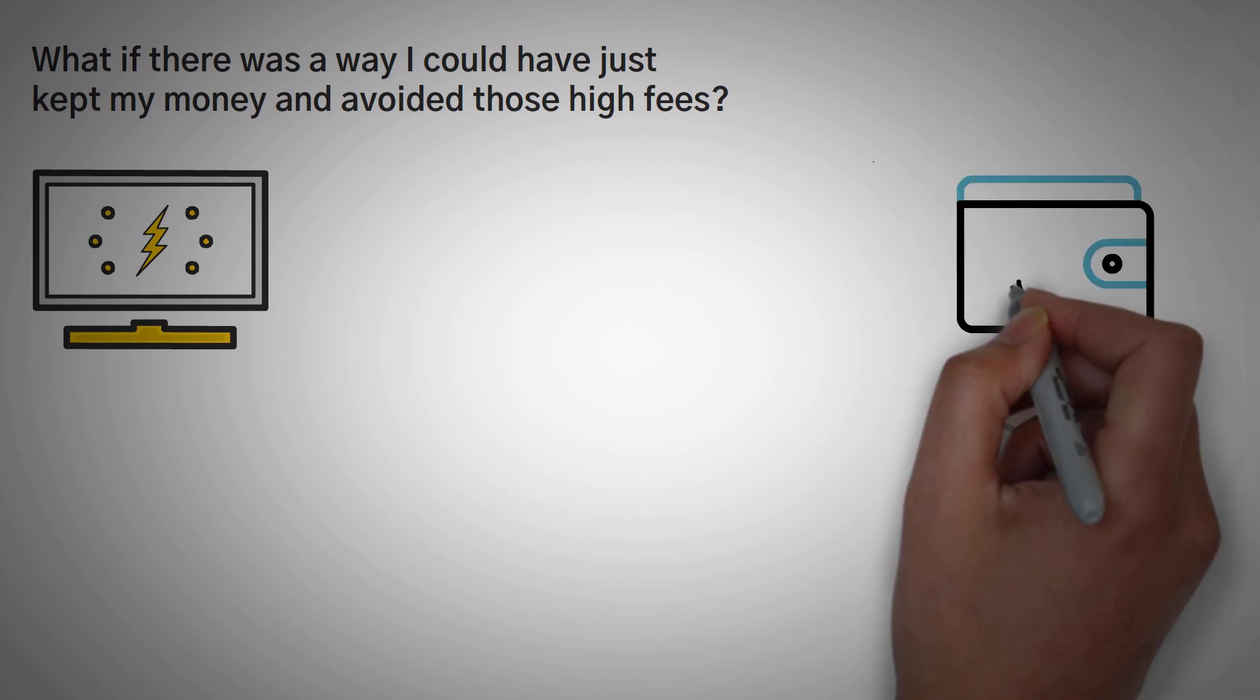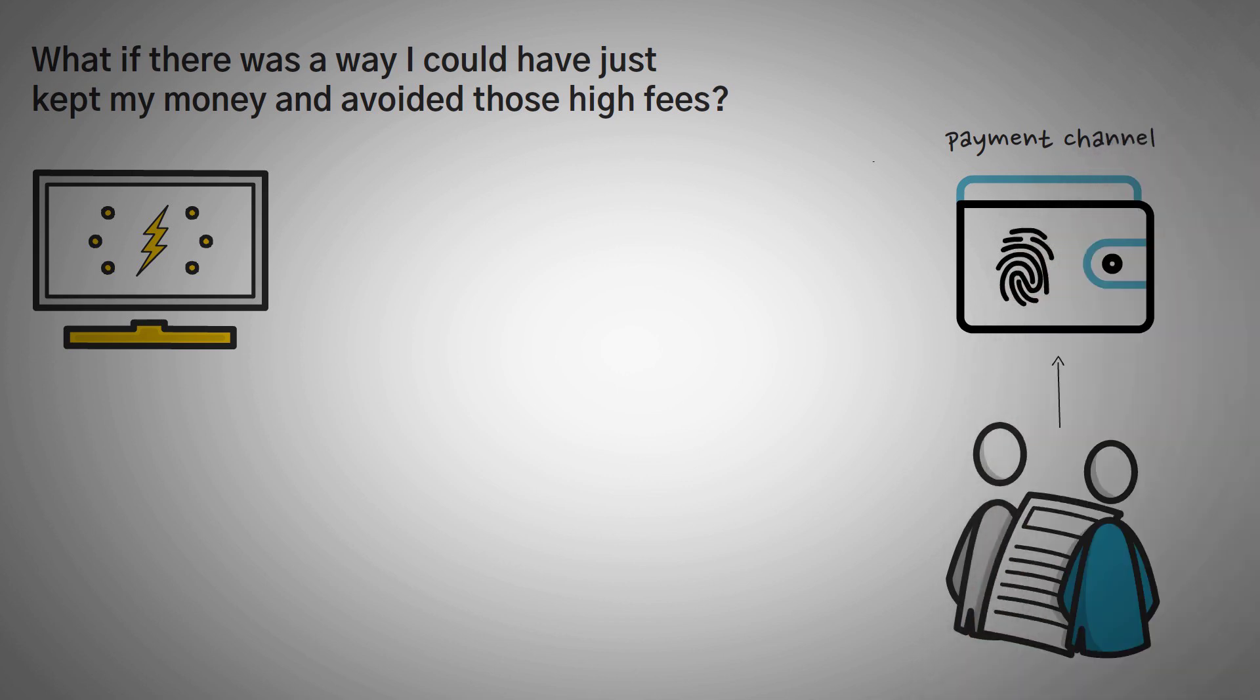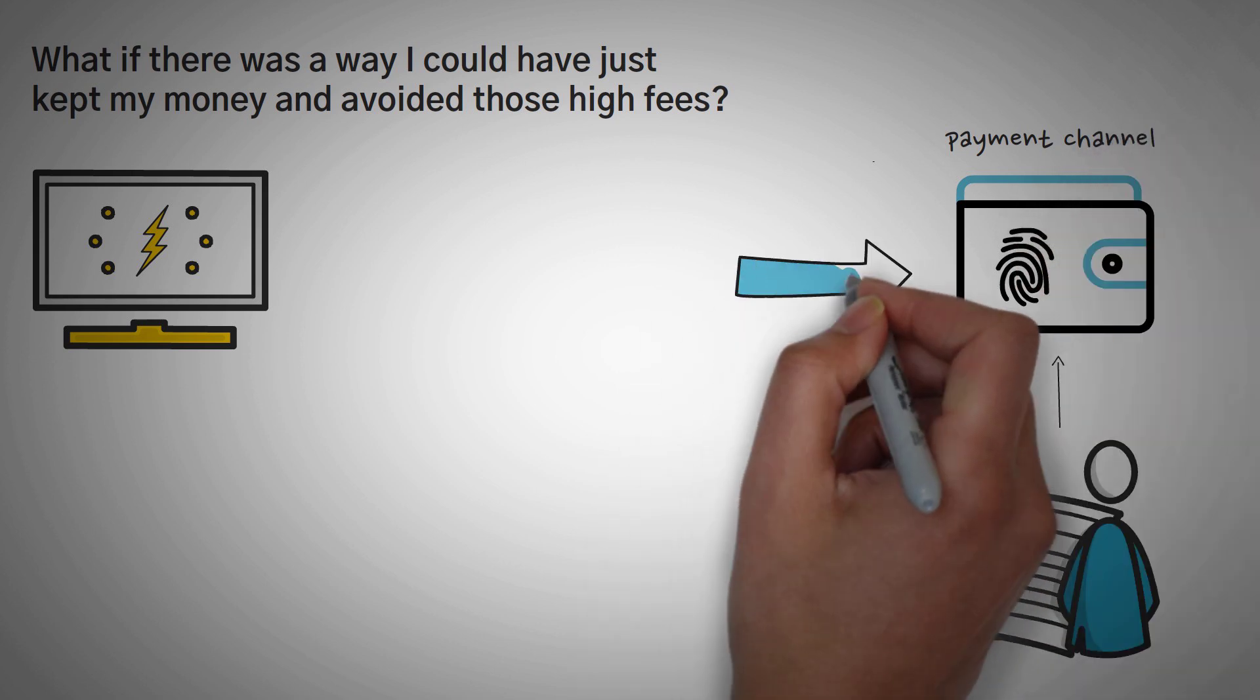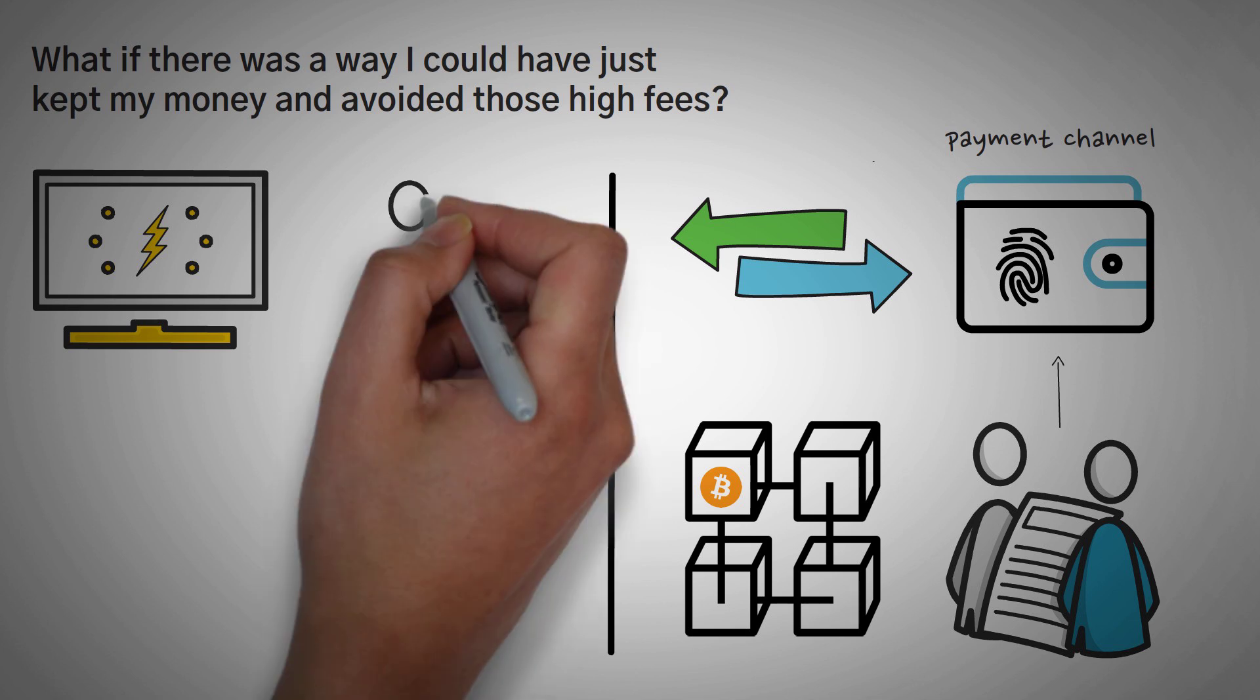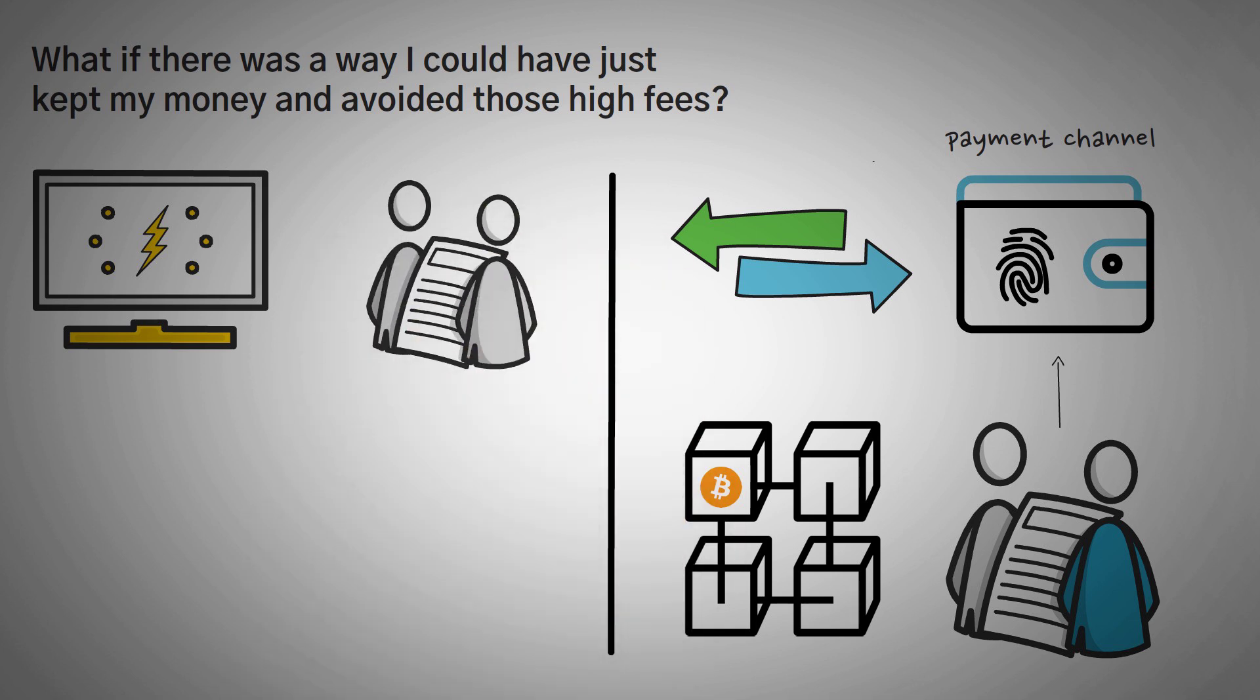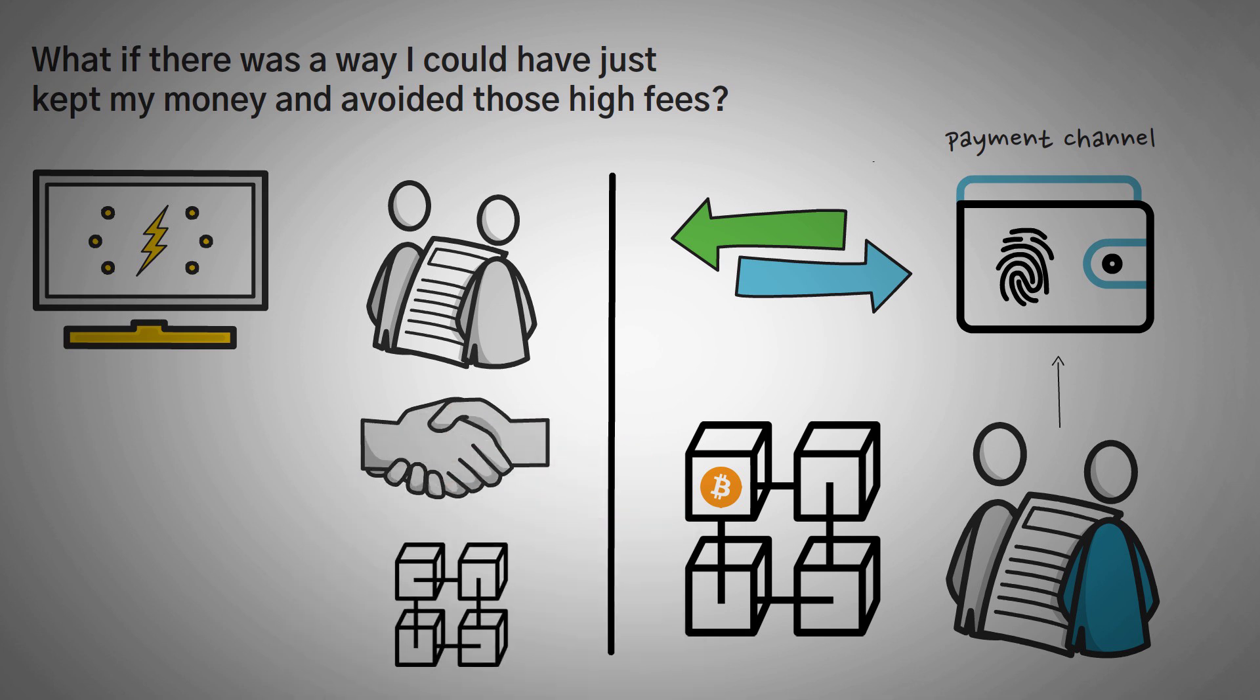You and someone else deposit money into a multi-signature wallet and create what is called a payment channel. In this payment channel, you and someone else can send money back and forth until you decide to settle up and square up the payment channel with the main Bitcoin blockchain. Basically, you're creating a bunch of IOUs off of the blockchain. Then, when both parties agree to finalize all transactions, you put one single transaction on the blockchain.